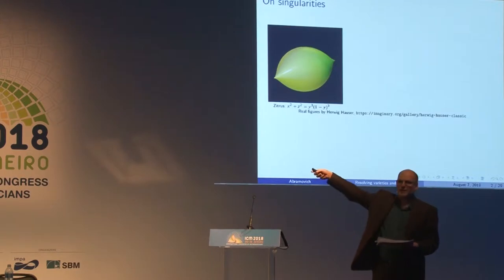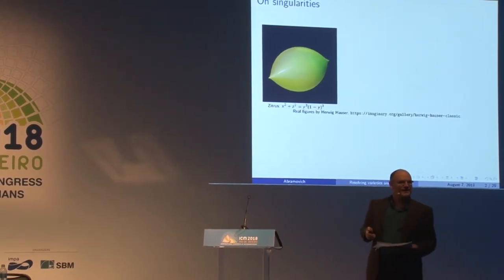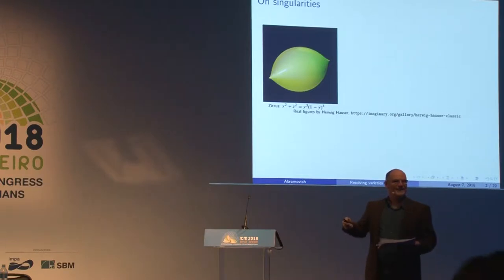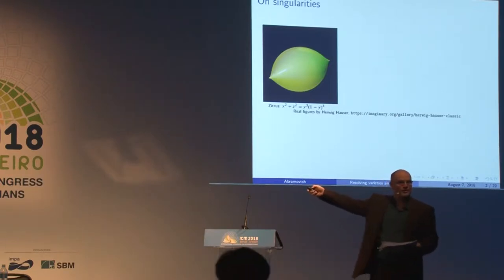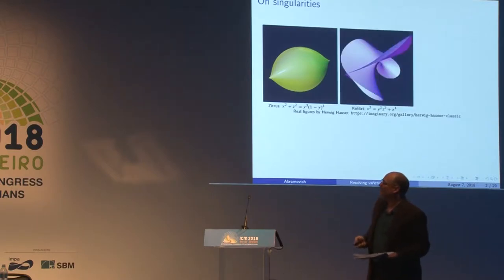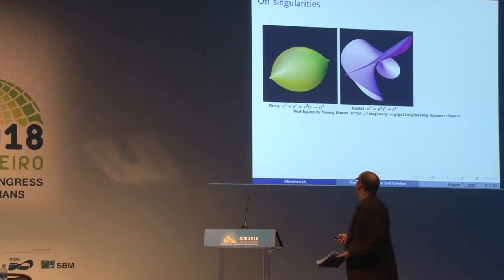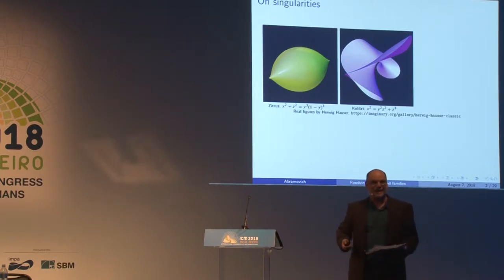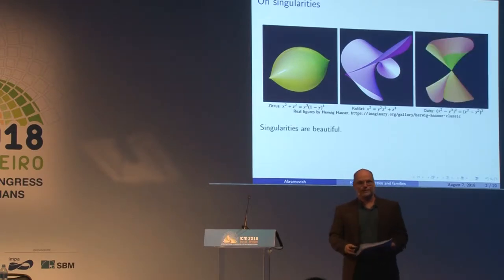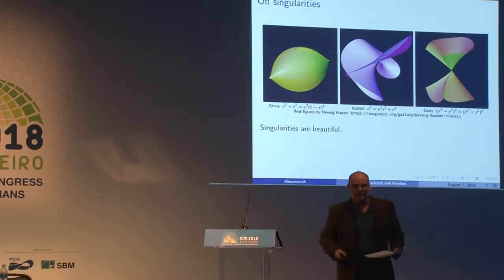So, remove something ugly and undesirable like this. These are not ugly — these are figures by Herwig Hauser. If you spend any time with Herwig Hauser, you know that some singularities are actually beautiful. So the question is, why do we do this? Why do we do this crime of replacing singularities by something boring and smooth?